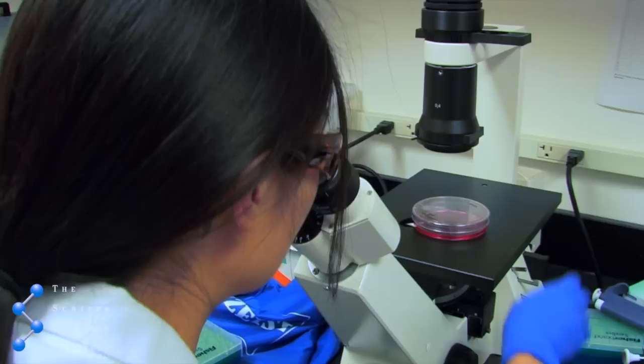My name is Jessica Sheu-Gruttadauria and I'm a third-year graduate student at the Scripps Research Institute. I'm a structural biologist and biochemist in the lab of Ian McRae.